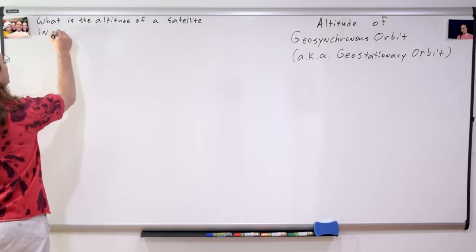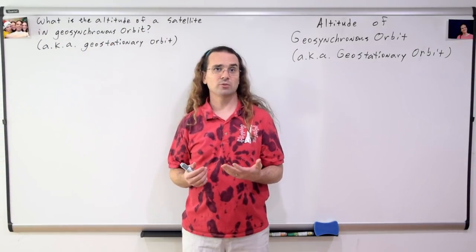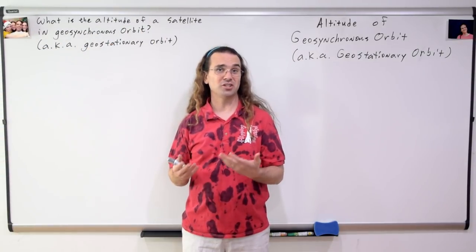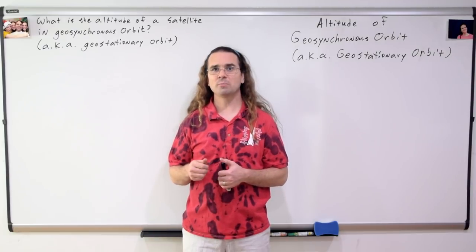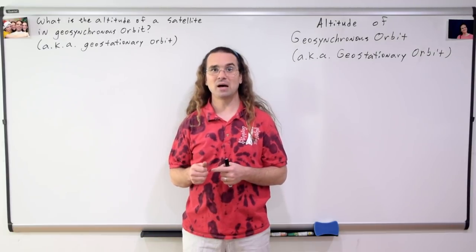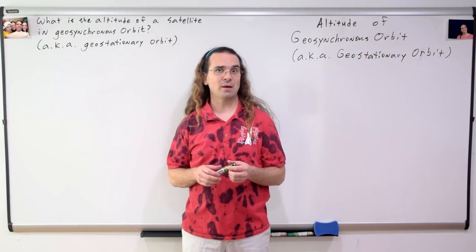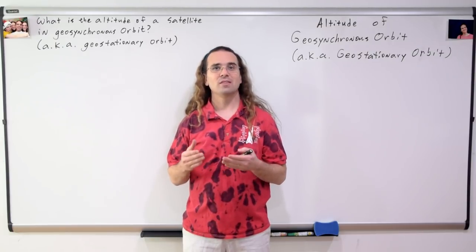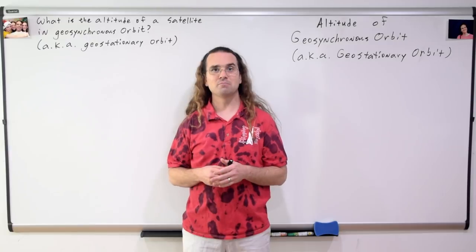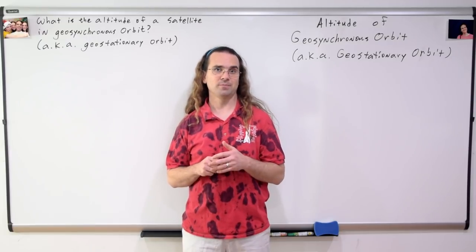Geosynchronous orbit, which is also called geostationary orbit, is where the object orbiting the Earth is always above the same spot on the Earth. In order for an object to stay above the same location of the Earth, the orbiting object must be directly above the Earth's equator.